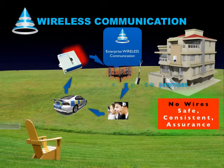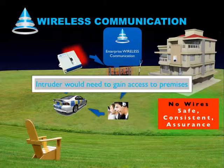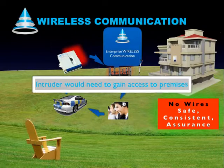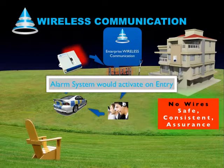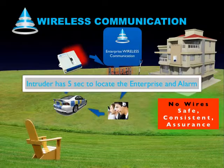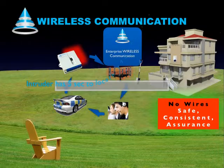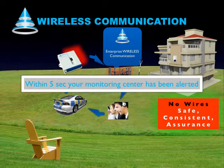A standard Enterprise does a check-in every hour with your monitoring center. So let's consider the situation the intruder has now been forced into. The intruder now has to gain access to your premises with communication still intact. The alarm system, if installed correctly, will activate on unauthorized entry. The intruder has five seconds to locate the Enterprise if he wishes to interrupt communication with the monitoring center. Within five seconds, your monitoring center is alerted of the intruder's invasion of your privacy.